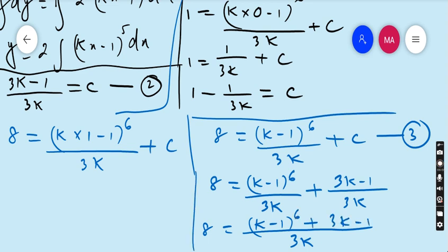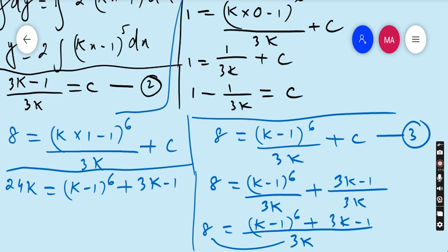So 8 equals, taking 3k as the LCM, (k - 1) to the power 6 plus 3k minus 1, all over 3k. This 3k must be multiplied by 8. So 24k equals (k - 1) to the power 6 plus 3k minus 1.